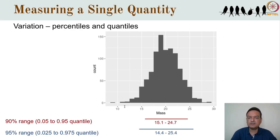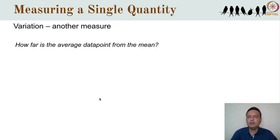Also play around with numbers on a piece of paper or in a spreadsheet program, sorting them and counting up places, until you feel you have gained an intuitive understanding of quantiles. Now let's talk about another measure of variation that many of you will be familiar with. Let's say we wanted to construct a measure of variation as something that tells us how far the average data point is from the mean. We can calculate how far each data point is from the mean and then take an average.